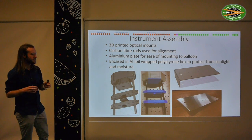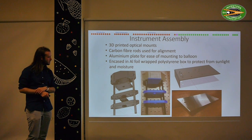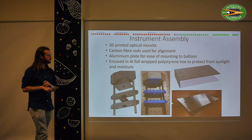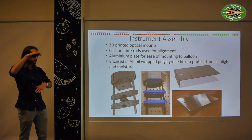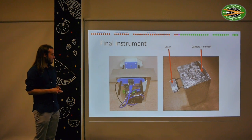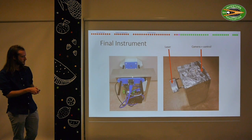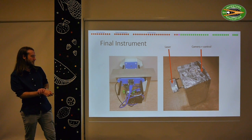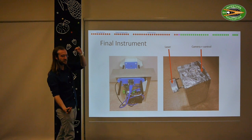To keep the weight down, we used 3D printing for a lot of the optical mounts where the laser and camera sit, as well as carbon fibre rods for spacing parts of our sensing system. Where possible we used polystyrene to keep overall weight down, and protected the instrument from sunlight and water using aluminium foil around the box. In the final instrument, the laser shines out of the smaller box onto the camera in the bigger box. Our sampling volume is any particle passing through between those two points as the instrument flies through the cloud on the balloon.